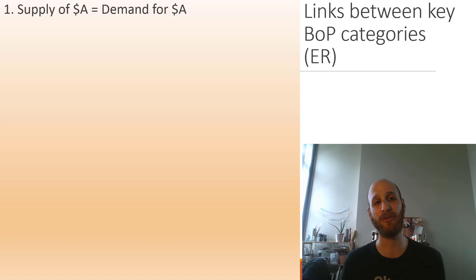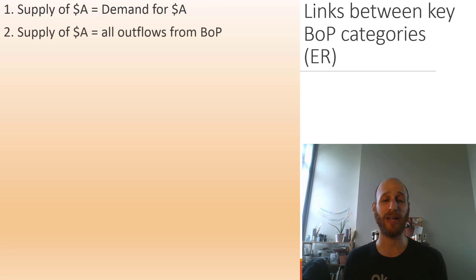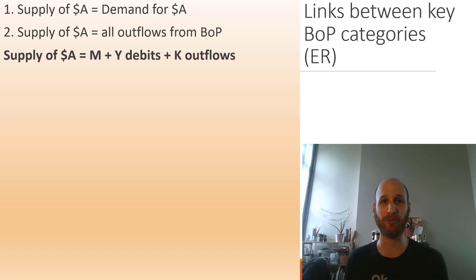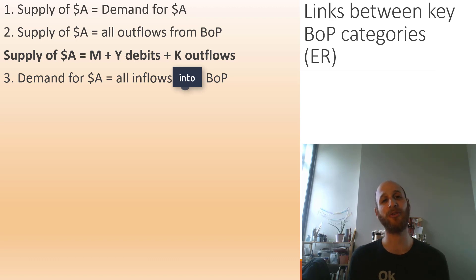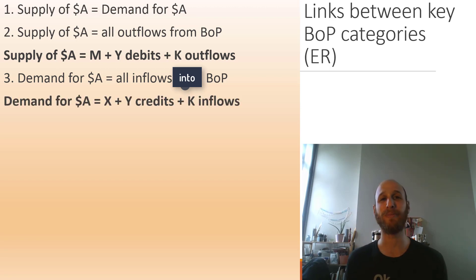We start with the supply of Australian dollars equals the demand for Australian dollars — this is how things occur under a floating exchange rate. The supply of Australian dollars equals all outflows, that is: imports, plus income debits, plus capital outflows. The demand for Australian dollars is all inflows to the balance of payments: exports, income credits, and capital inflows.